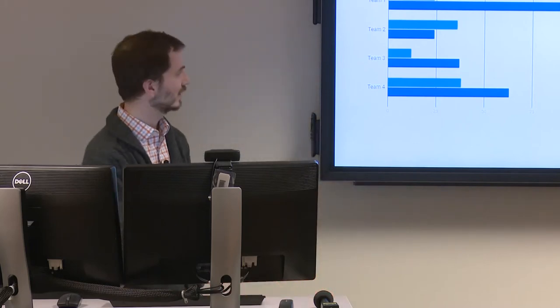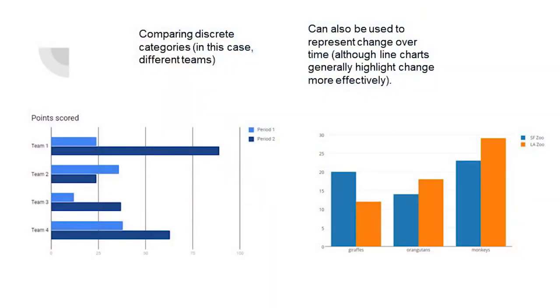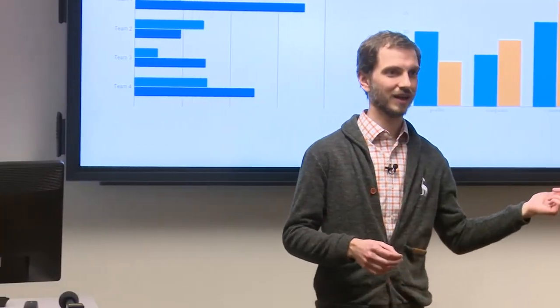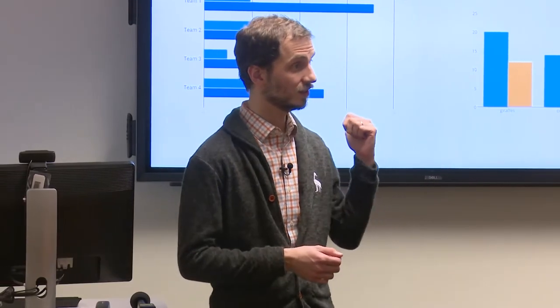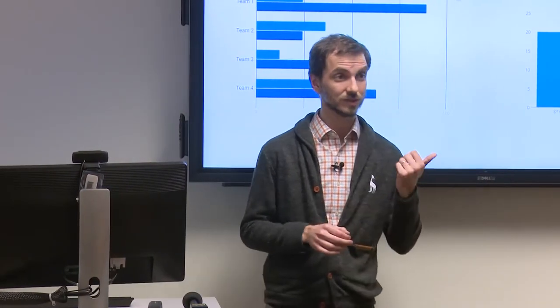For example, comparing categories: this chart on the right shows the number of giraffes, orangutans, and monkeys at two different zoos. San Francisco Zoo is in blue, LA Zoo is in orange. You can quickly see San Francisco has the market cornered on giraffes, whereas LA has more orangutans and monkeys. Even though this is a simple example, you can immediately see what's going on — that's the advantage of a bar chart for categorical comparison.